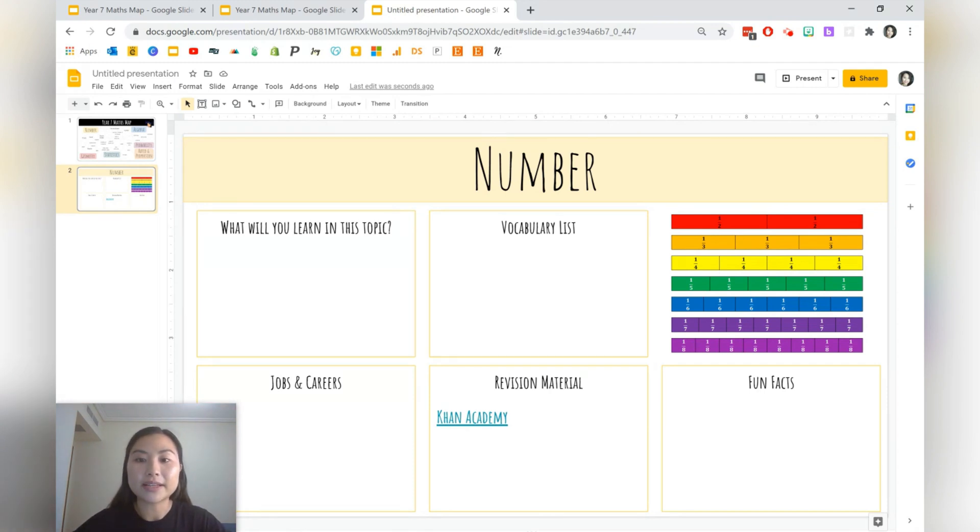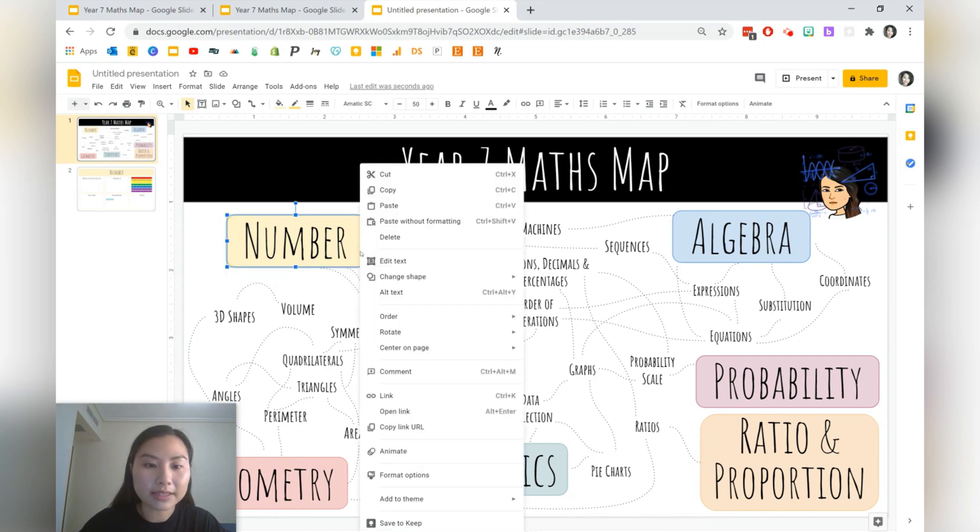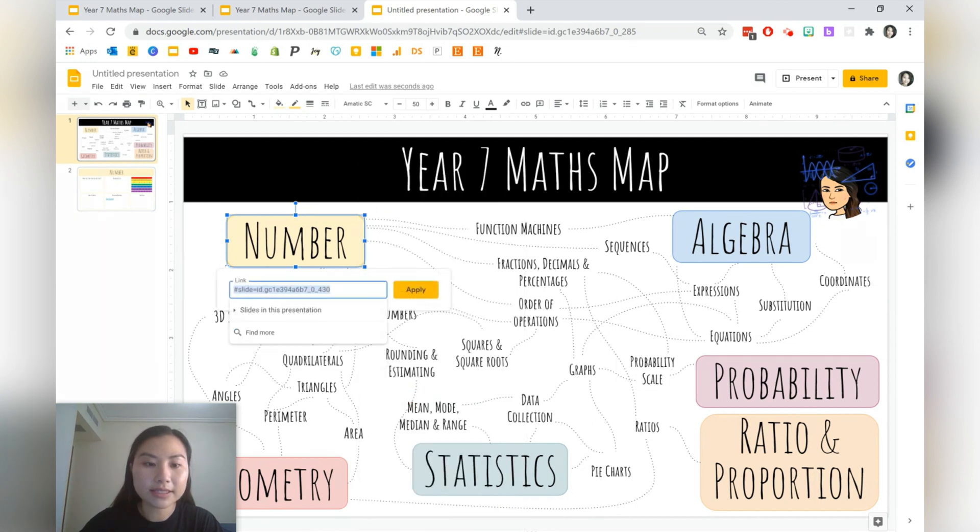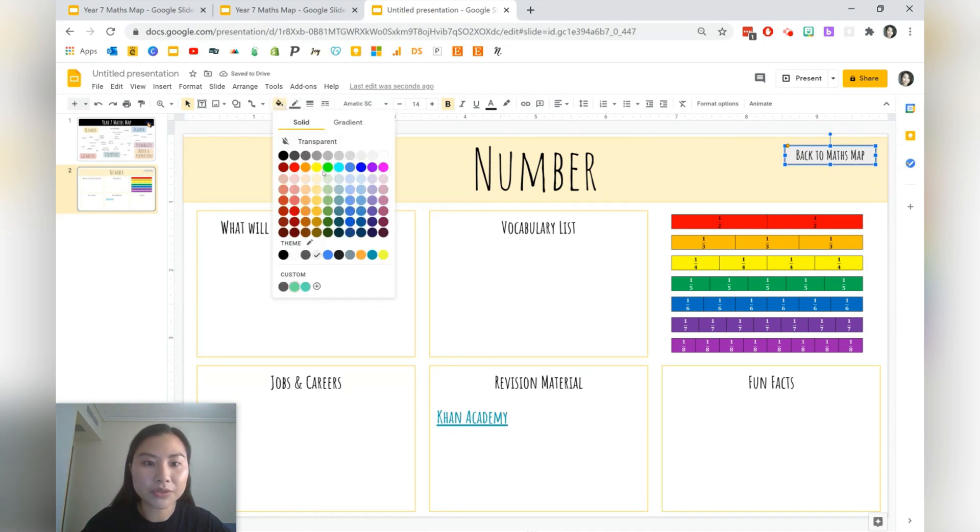The last thing is to make sure that it's interactive for students. So what we're going to do is we're going to link up this text box with slide number two which is our slide for number. We're going to right click the shape here. I'm going to go to link and we're going to click slides in this presentation and it is slide number two that we want to link here. So click slide number two press apply. So that link should be working. We also want to be able to go back to our subject map. So I'm going to insert a shape here, just a rounded rectangle and I'm going to write back to maths map. Change the font so it matches my theme.